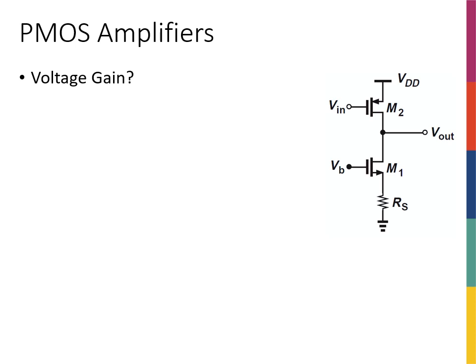Let's try a PMOS amplifier so we can see that things are quite similar to NMOS amplifiers. Nothing really changes in terms of AC analysis — the small signal model of an NMOS and PMOS are identical, not just similar, but actually identical.